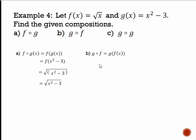For g∘f, we do g of √x, since f(x) = √x. We start with g's formula, x² − 3, remove the variable, and plug in √x. We get (√x)² − 3, which simplifies to x − 3. But the domain is x ≥ 0, because √(x²) = x only for x ≥ 0 — it's an imaginary number otherwise.